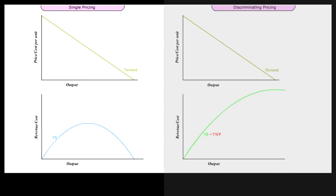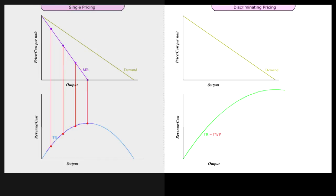From the single seller's TR curve, we can derive the marginal revenue MRSP at any output level from the slope of TR. From the discriminating price's TR curve, TWP, we can derive the marginal revenue MRDP at any output level from the slope of TWP.